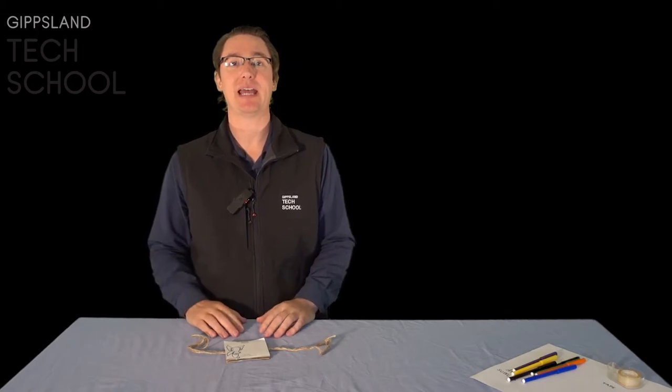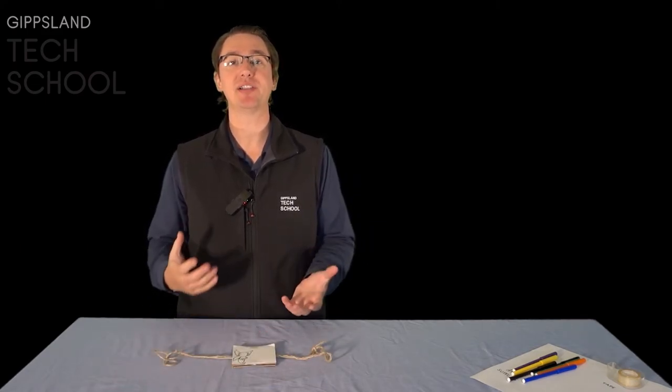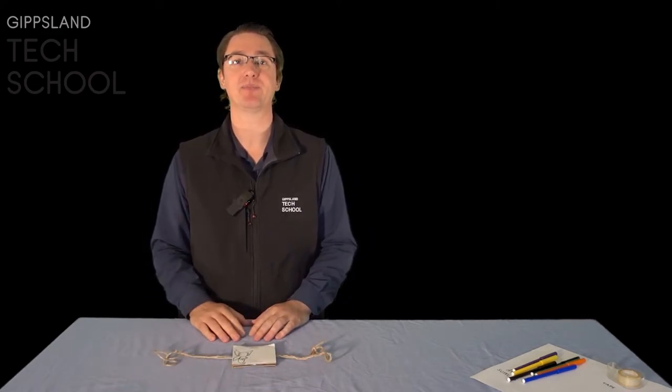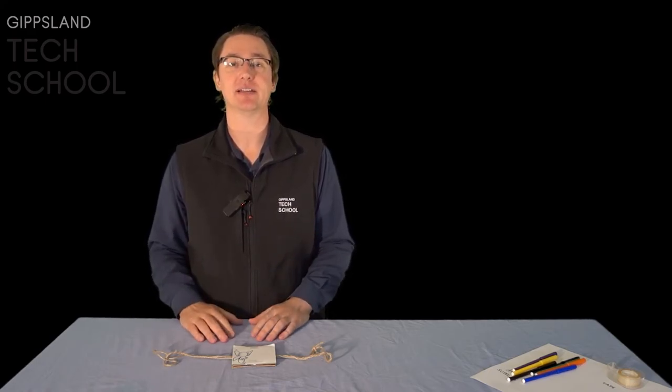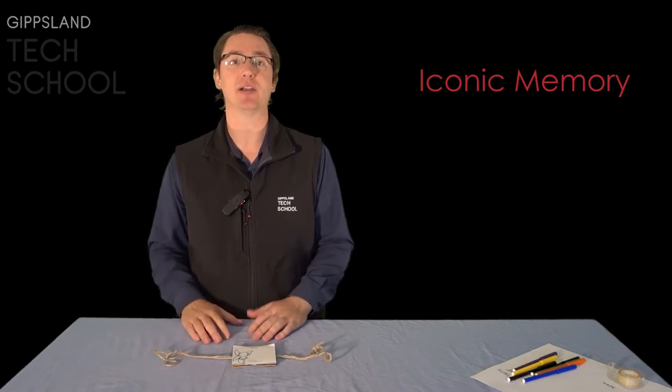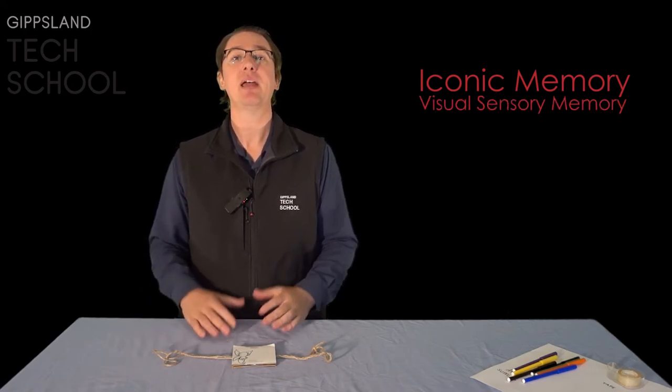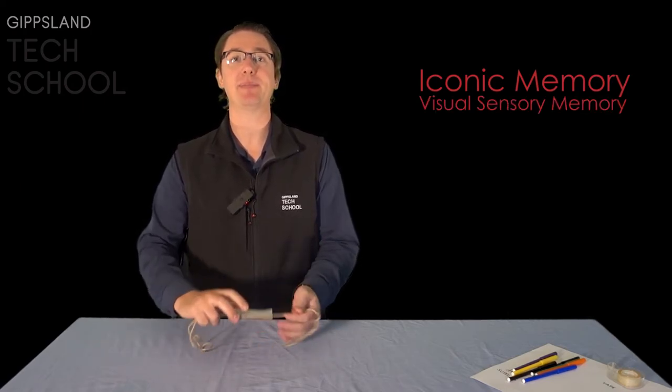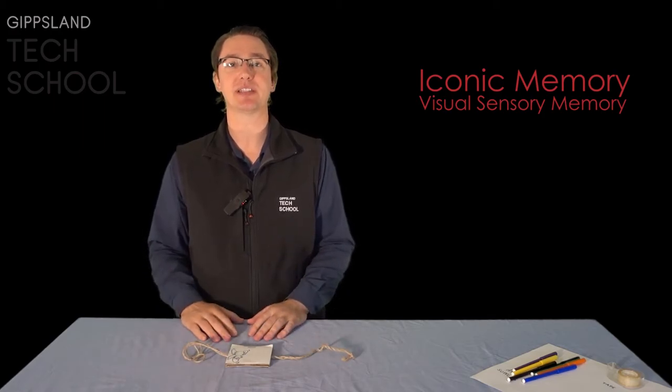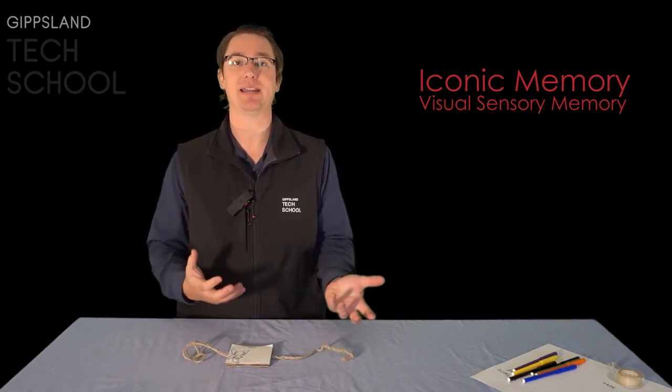Let's talk about what's happening here. We know that this is two separate images, yet our brain's telling us that it's one. This is to do with how our brain processes and retains information. When we see something, our brain holds onto it for about half a second. This is called iconic memory or visual sensory memory. Because we're seeing these pictures so rapidly, our brain's holding onto both of them at the same time, telling us that it's one image.